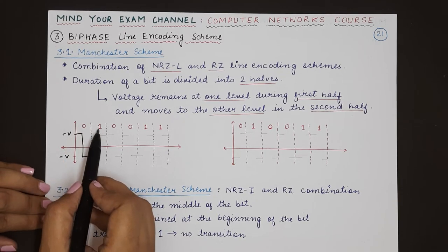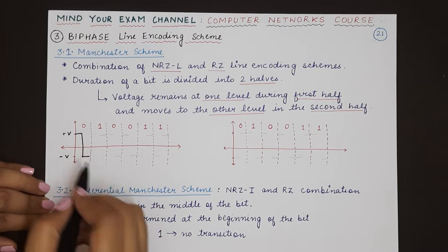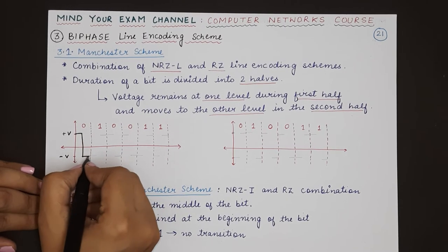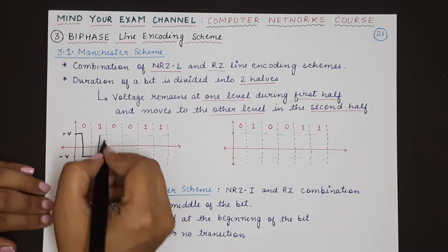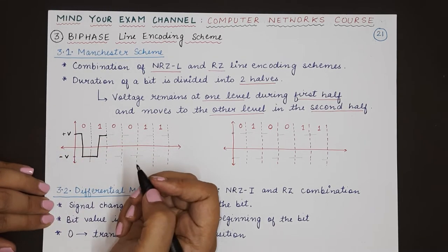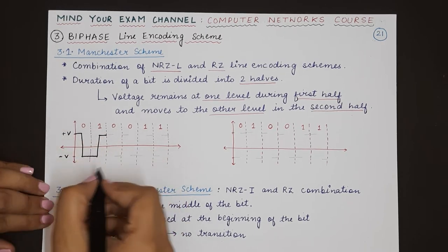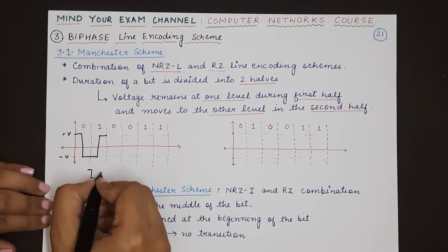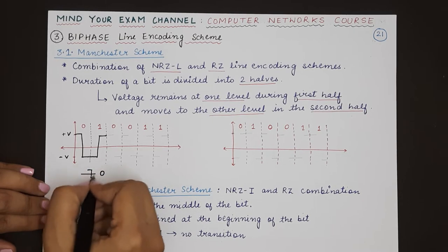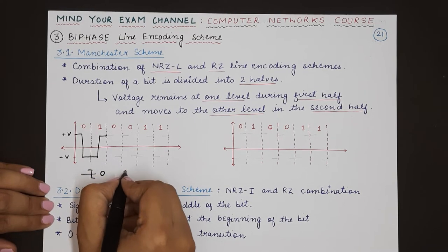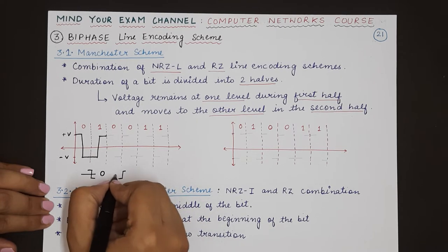The next bit is one. For one, we start from negative voltage and in the middle of the bit we transition to positive voltage. Zero is encoded from positive to negative, and one is encoded from negative to positive — the transition does not stop at zero voltage level.